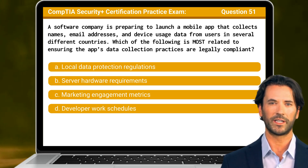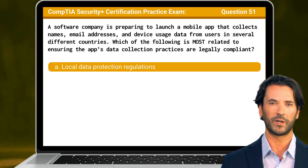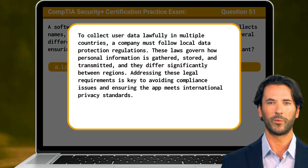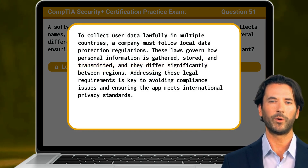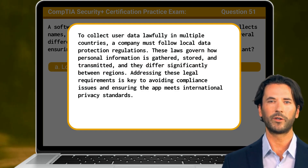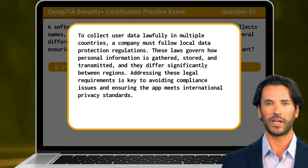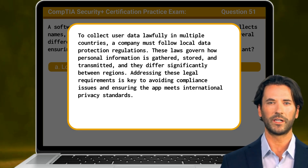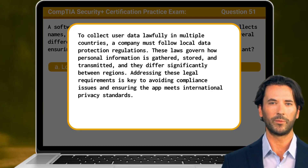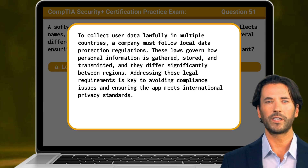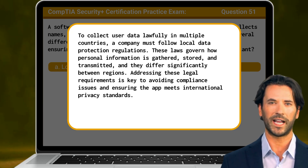Question 51. The answer is A: Local Data Protection Regulations. To collect user data lawfully in multiple countries, a company must follow local data protection regulations. These laws govern how personal information is gathered, stored, and transmitted, and they differ significantly between regions. Addressing these legal requirements is key to avoiding compliance issues and ensuring the app meets international privacy standards.